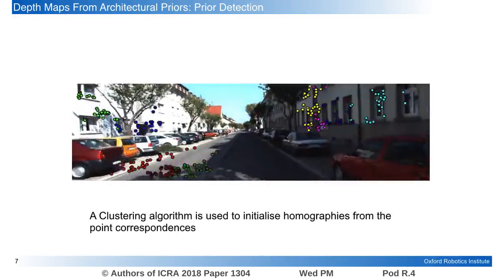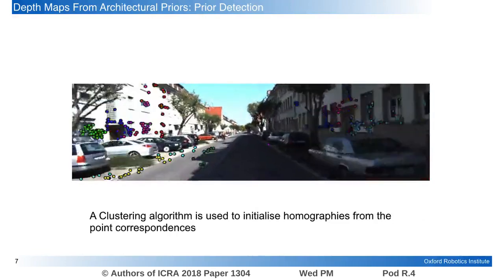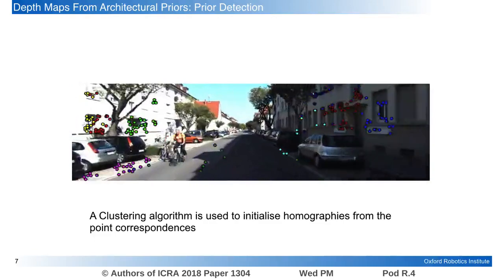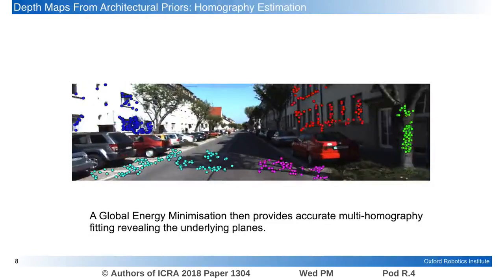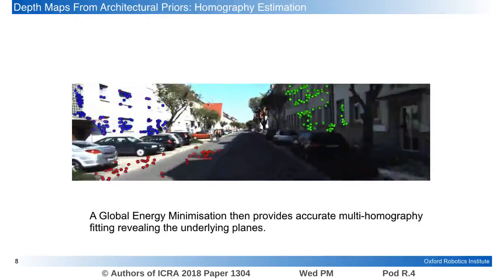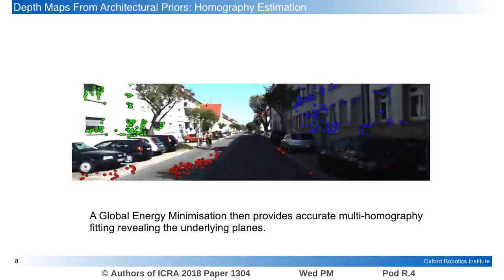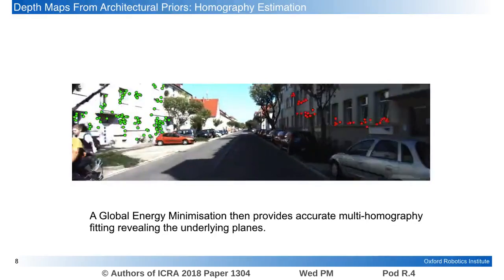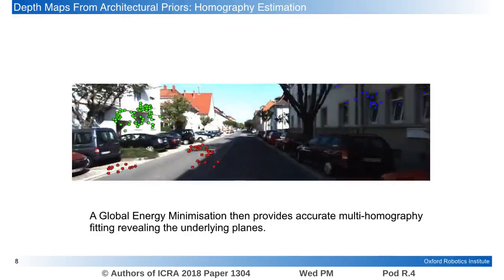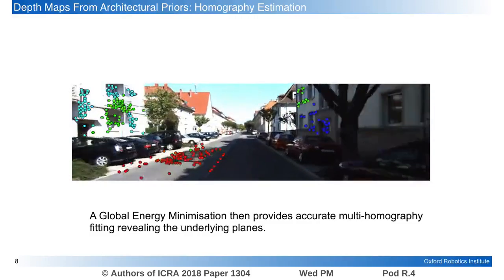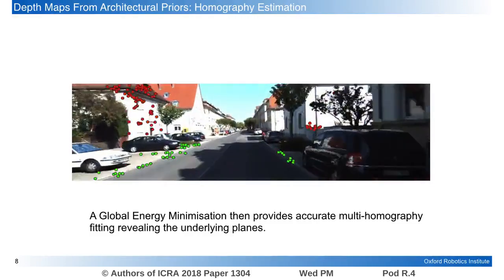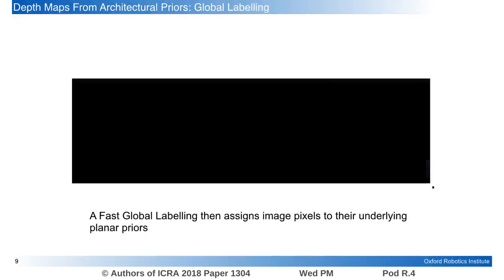Homographies in this work are initialized by a clustering algorithm that has been shown to outperform classical methods. Robust multiple homography fitting is then performed using a fast energy minimization that has been shown to produce accurate results in the presence of noise and clutter. Homographies can then be decomposed to get the underlying plane prior via singular value decomposition.